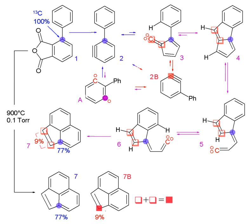Mass spectrometry detects the difference in an isotope's mass, while infrared spectroscopy detects the difference in the isotope's vibrational modes. Nuclear magnetic resonance detects atoms with different gyromagnetic ratios. Radioactive decay can be detected through an ionization chamber or autoradiographs of gels.